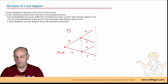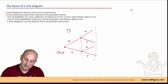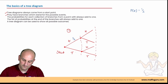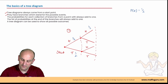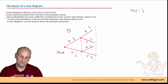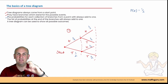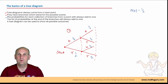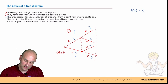Let's write the probabilities on the tree diagram. For a standard coin, the probability of getting a head is one half, and the tail is also one half. For the second toss, each branch still has probability one half. Notice that for each set of branches coming off a point, the probabilities add to one — a half plus a half equals one — because together they account for all possible outcomes.